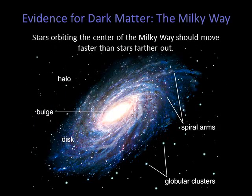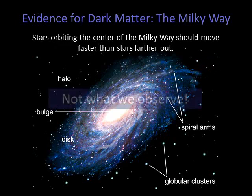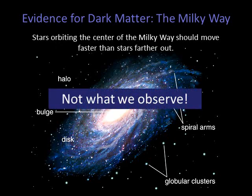Kepler's law tells us that for any astronomical system that has its mass concentrated at its center, objects near the center should be moving faster than objects far away. We saw this in our own solar system — the inner planets move faster, as well as in the accretion disks. We therefore expect that stars near the center of our galaxy should move faster than stars near the outer edges, but this is not what we observe.